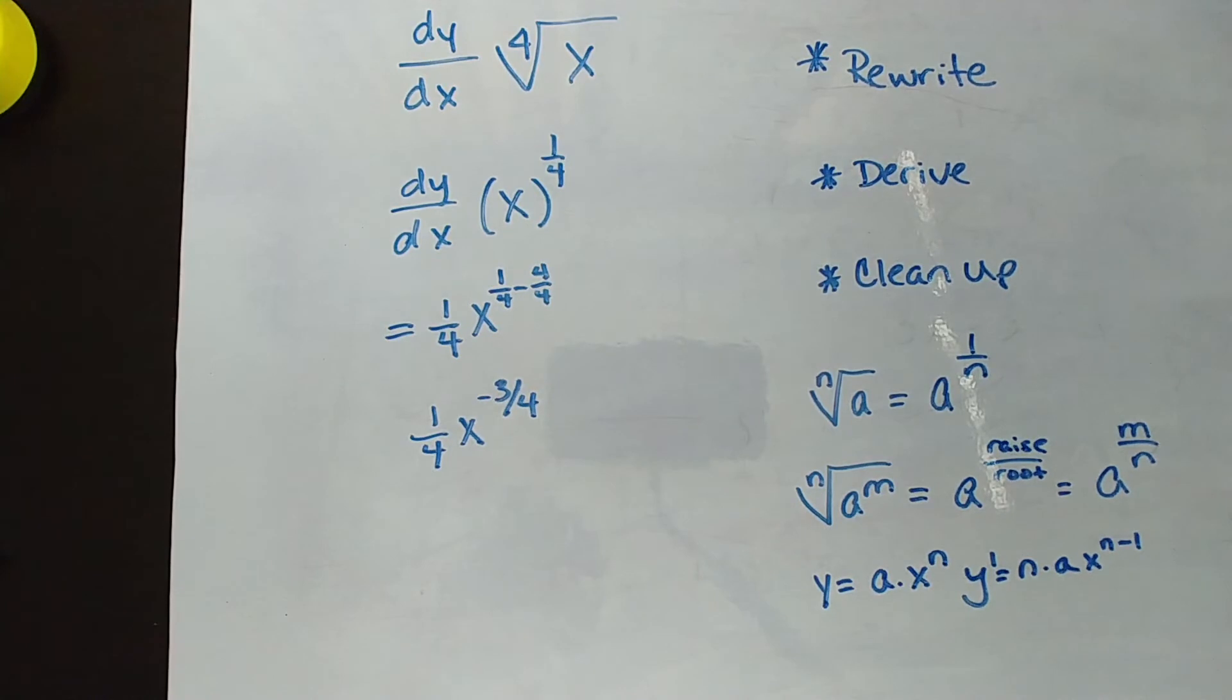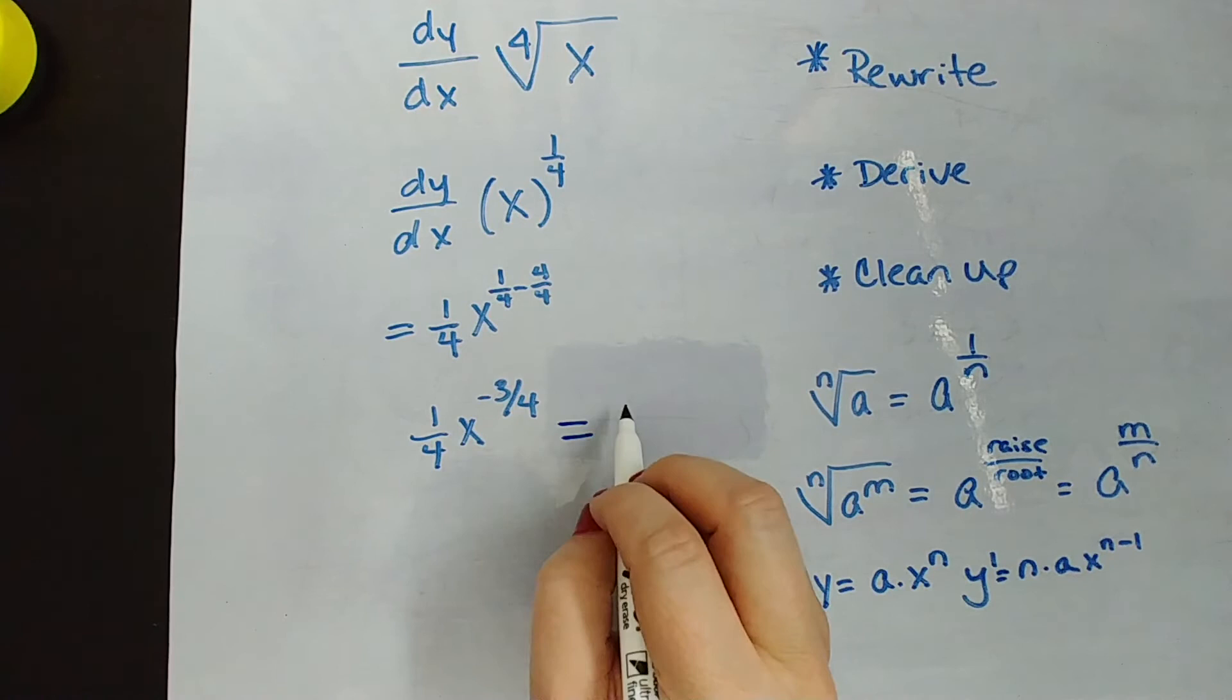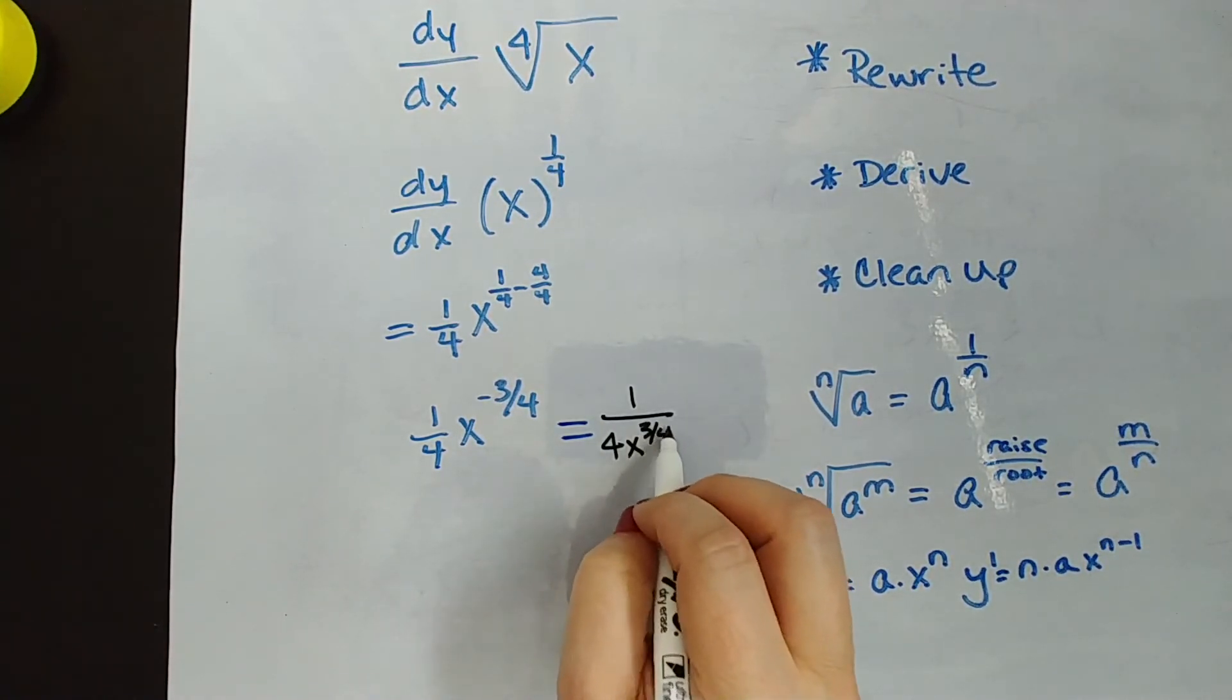Now this should be okay. I know you spent a lot of time in Algebra 2 getting rid of negative exponents, and then you get to calculus and all of a sudden they're okay again. Now if your teacher doesn't give it to you in this form, remember if you see an answer that doesn't look exactly like yours, make sure it's not an equivalent form before you freak out thinking you did it wrong. This is also the same—remember the negative exponent is reciprocal, so we could say it's one over four times x to the positive three-fourths power if your teacher wrote it with positive exponents.